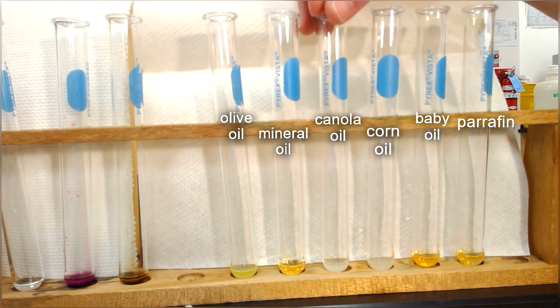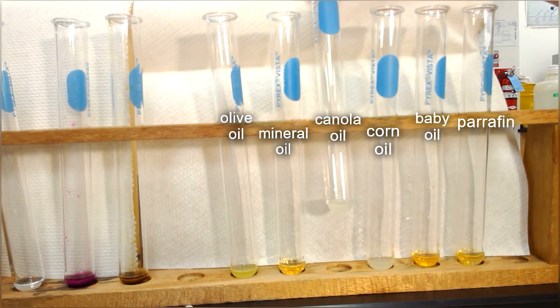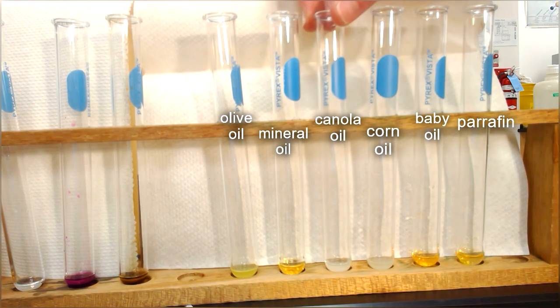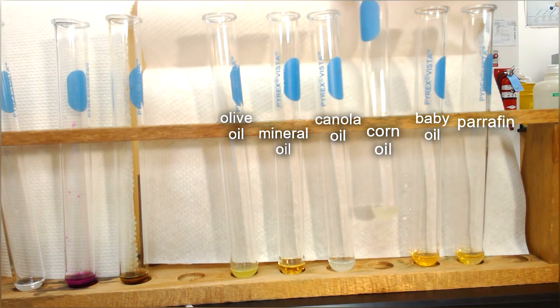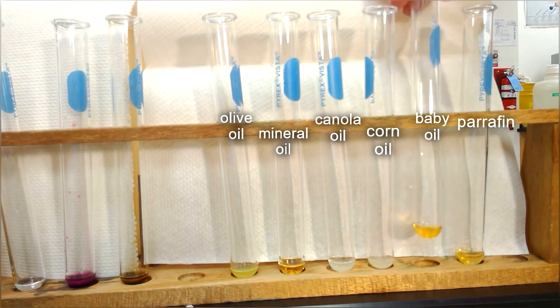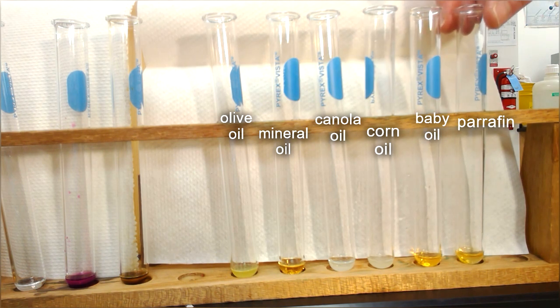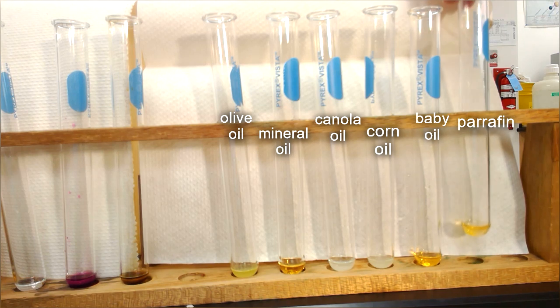Third, we have the canola oil, which has been turned colorless. Fourth, we have corn oil, colorless. Fifth, we have baby oil, orange still. And lastly, we have paraffin oil and orange still.